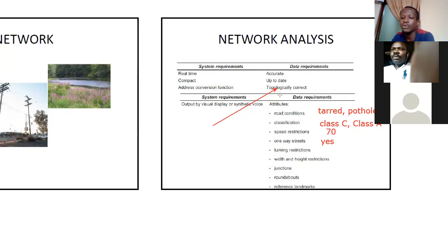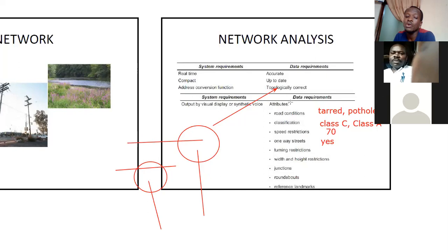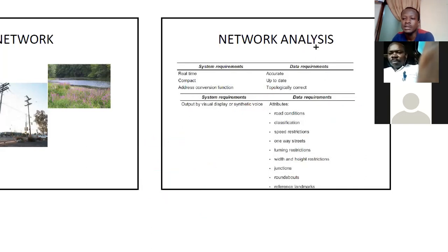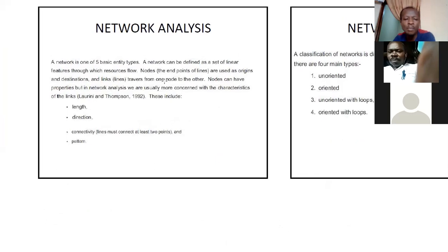If you don't have topology enforced, lines are not really well connected. At a T-junction you might have two lines that are disconnected. We have to deal with these issues before starting the analysis. By the time you press a button and say 'find me the shortest route,' you must already have good data. Network analysis depends heavily on the network dataset. A network is one of five basic entity types and can be defined as a set of linear features through which resources flow.